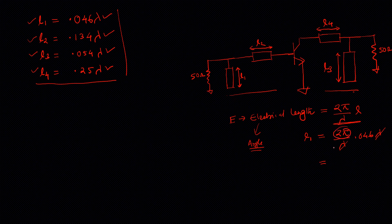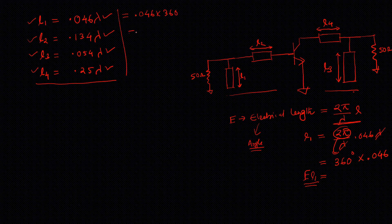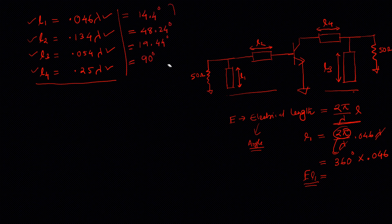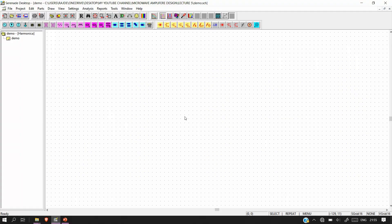In degrees, 2π becomes 360°, so for L1 the electrical length is 360° × 0.046 = 16.56°. We simply multiply each lambda value by 360° to get the electrical length in degrees. After multiplying all values, we arrive at the electrical lengths we will insert into Serenade for simulation.